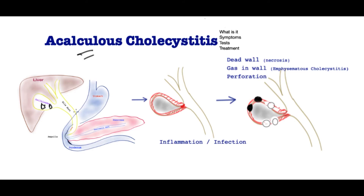Acalculous cholecystitis is different. Looking at the gallbladder in isolation, in acalculous cholecystitis there are no stones; however, the exit to the gallbladder does get blocked and the wall of the gallbladder gets red and inflamed. Typically, the fluid within the gallbladder gets infected and the gallbladder becomes hugely inflamed.